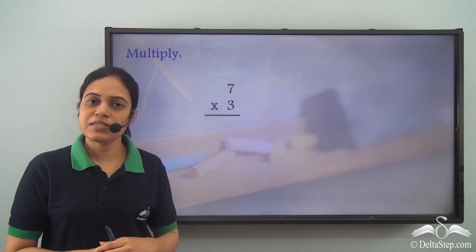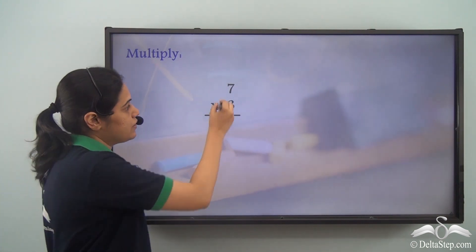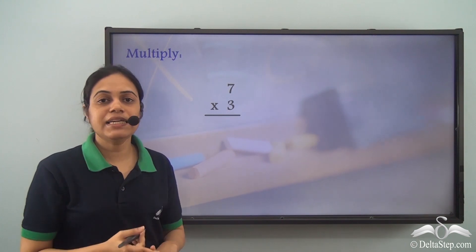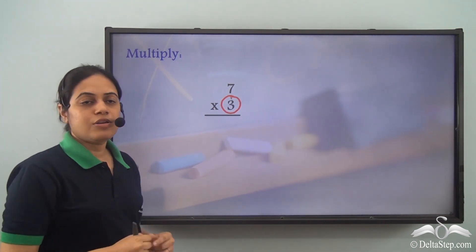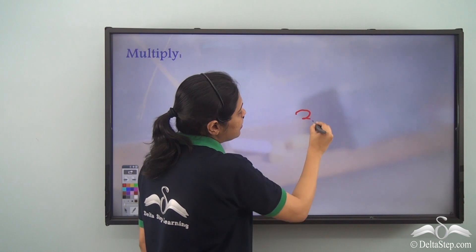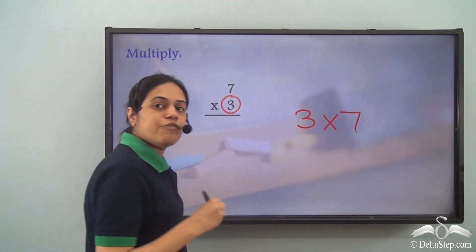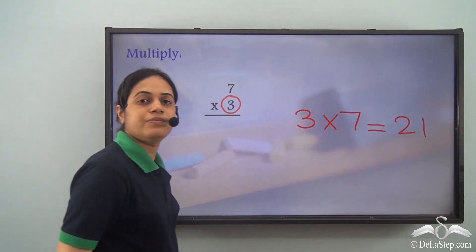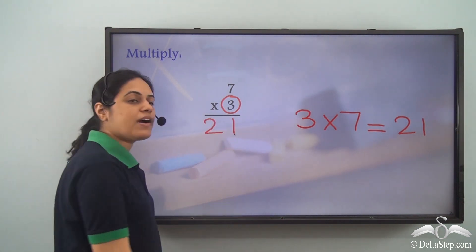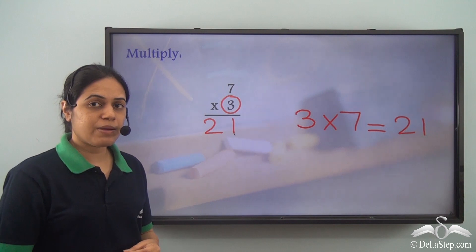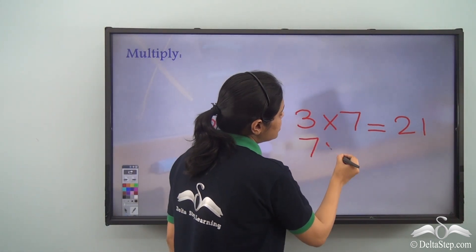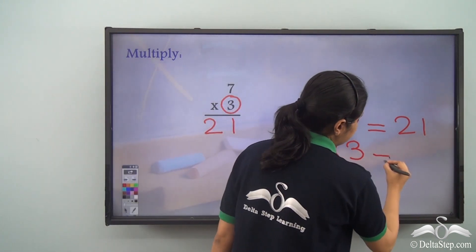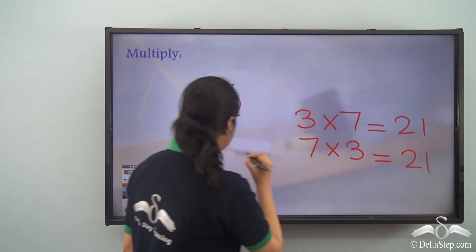Now what is 7 into 3 — 7 multiplied by 3? For this I need the table of 3. So 3 into 7, from the table of 3, 3 into 7 is 21. So the answer will be 21. You can also use the table of 7 — 7 into 3 again gives 21. That is the same answer.